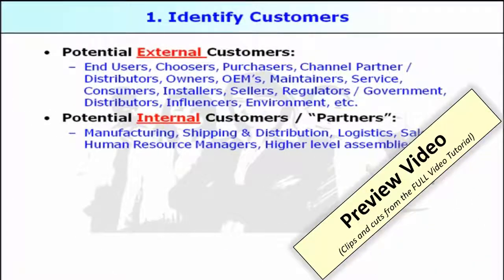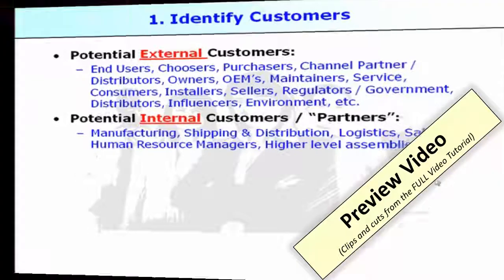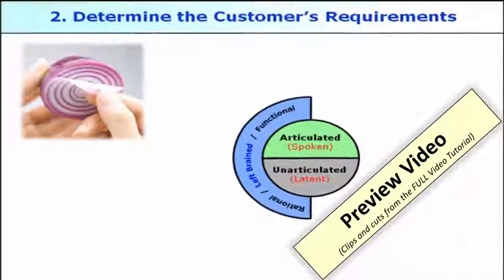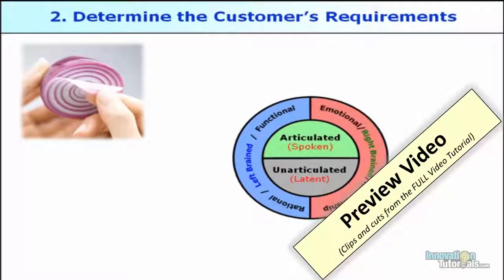Also consider internal customers or partners inside your company — manufacturing, shipping and distribution, and logistics. Customer needs can be split between rational left-brain functional type needs and emotional relationship or right-brain type needs.